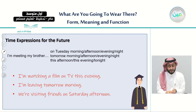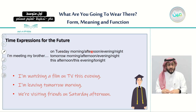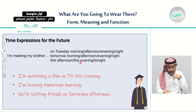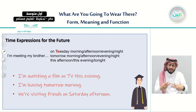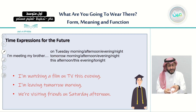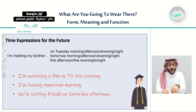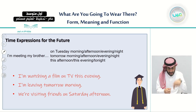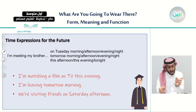You can also use other time expressions. For example: 'I am meeting my brother on Tuesday morning,' or Tuesday afternoon, evening, or night. You can say tomorrow morning, afternoon, evening, or night. You can also say this afternoon, this evening, or tonight to talk about the time of this day. These are all time expressions you can use with the present progressive.